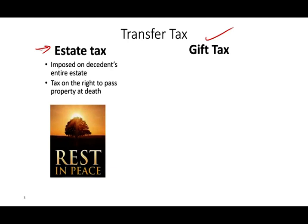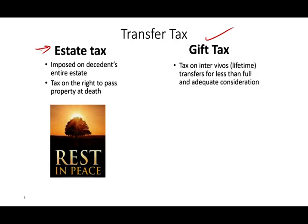Here what's happening: the person passed away and now they're passing the property to their kids, grandkids, whoever — it's after death. The gift tax is called a lifetime transfer or inter vivos. It's a gift tax where you give someone money and you don't expect anything in return. That's a gift tax.